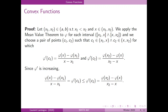This is just applying the mean value theorem: there exists c1 in the first interval and c2 in the second such that this holds. Since the derivative of phi is increasing and c2 is in the interval after the interval containing c1, we know that phi'(c1) is less than phi'(c2), and since each equals the respective difference quotient, we have the desired inequality.